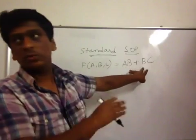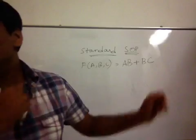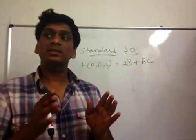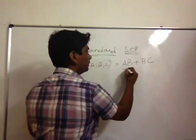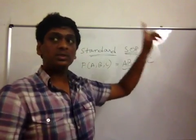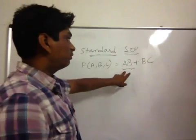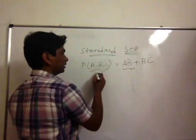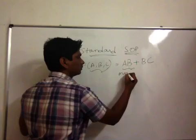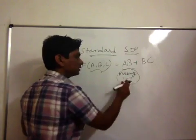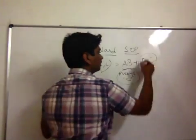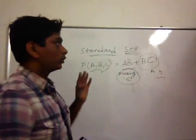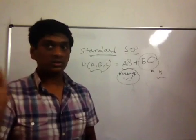You can say that just by looking at it. It is two products and sum of the products. The STANDARD SOP is every term, these are called min terms. For SOP, they are called min terms and for POS, they are called max terms. So, every min term should have all the variables in this. What are the three variables here? A, B and C. Here, C variable is missing. It is not there. And here, A is missing.